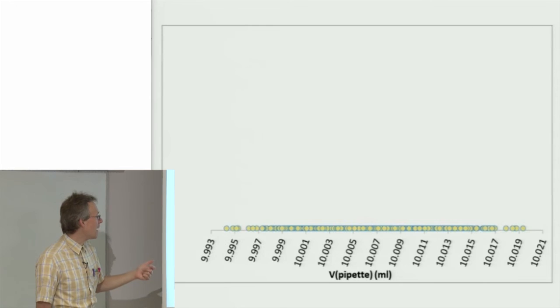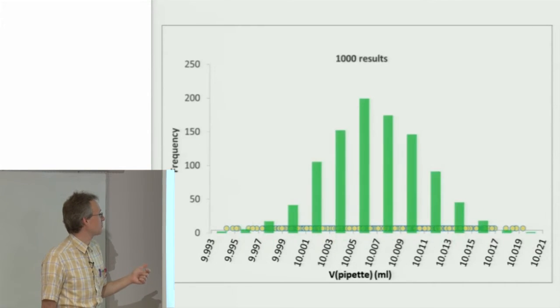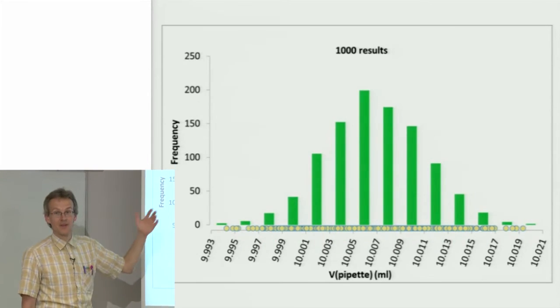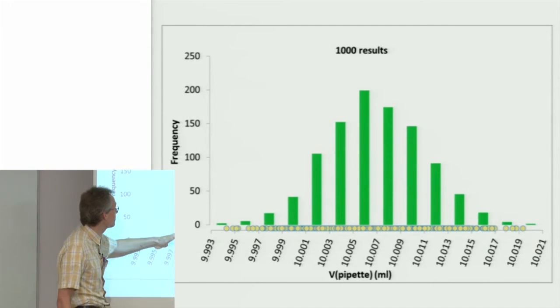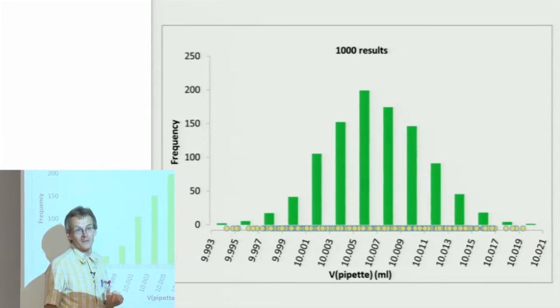But if we now make many, a very large number of measurements, let's say 1,000, then our histogram really will resemble the normal distribution curve very nicely.